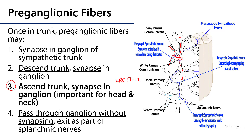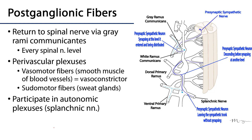A fourth option is that the preganglionic fiber can pass right through the ganglion without ever synapsing and head off to another ganglion. We call these splanchnic nerves — splanchnic being Greek for viscera. The ganglia that these splanchnic nerves synapse in are usually pre-aortic, meaning they are in front of the aorta and within the abdominal cavity, as we'll see in subsequent sessions.